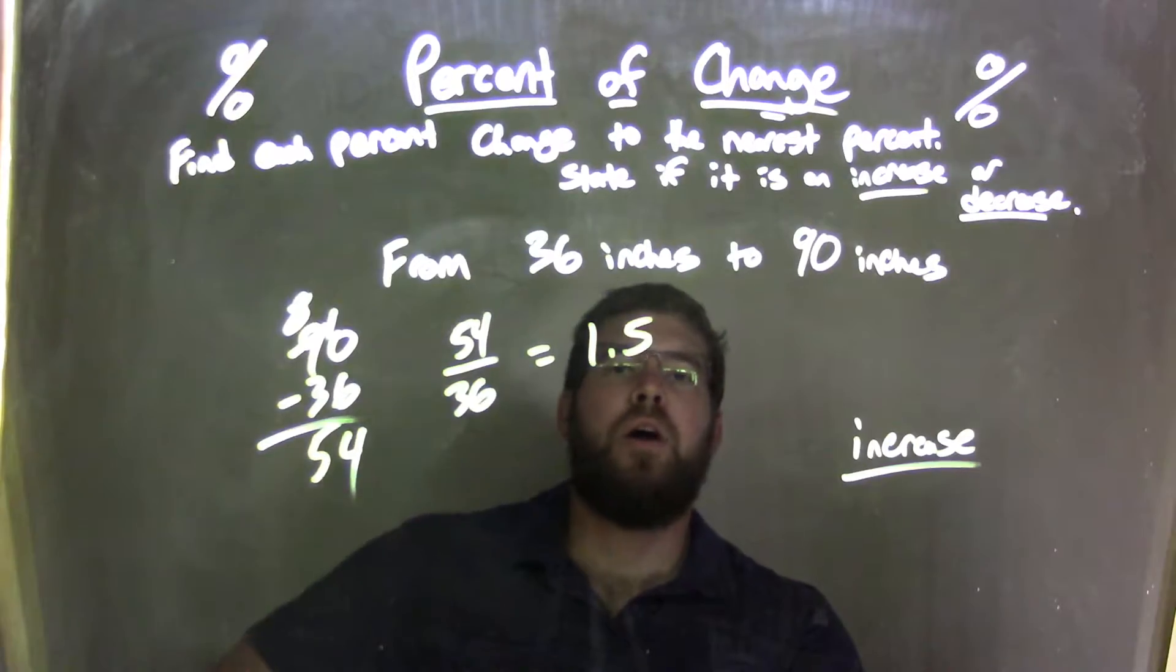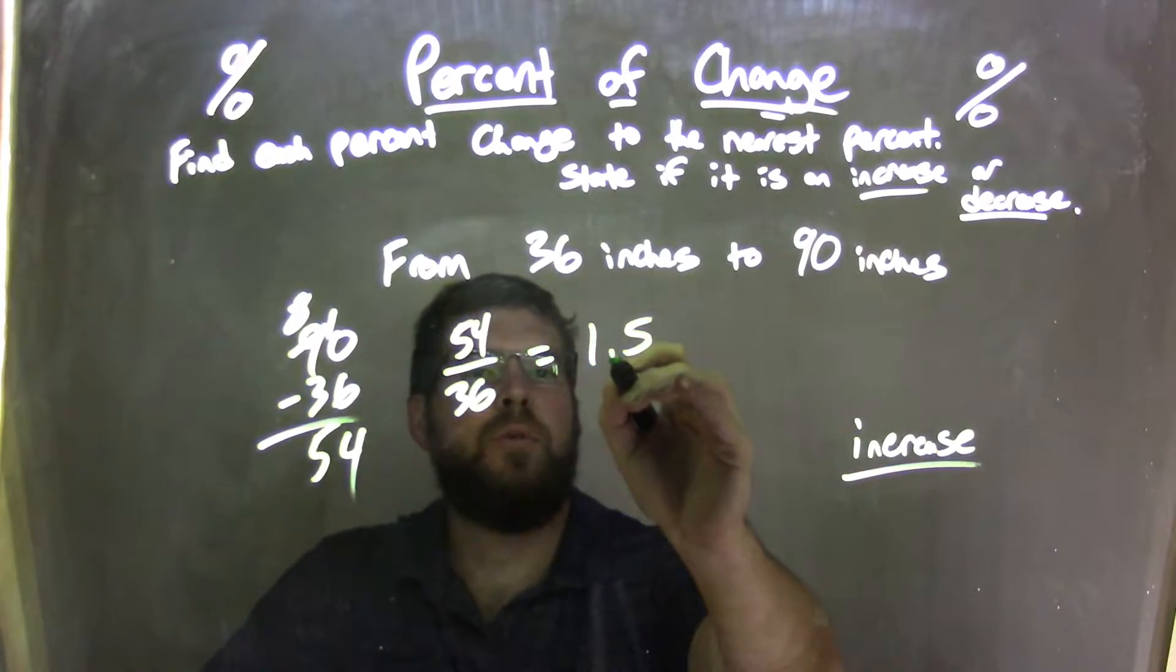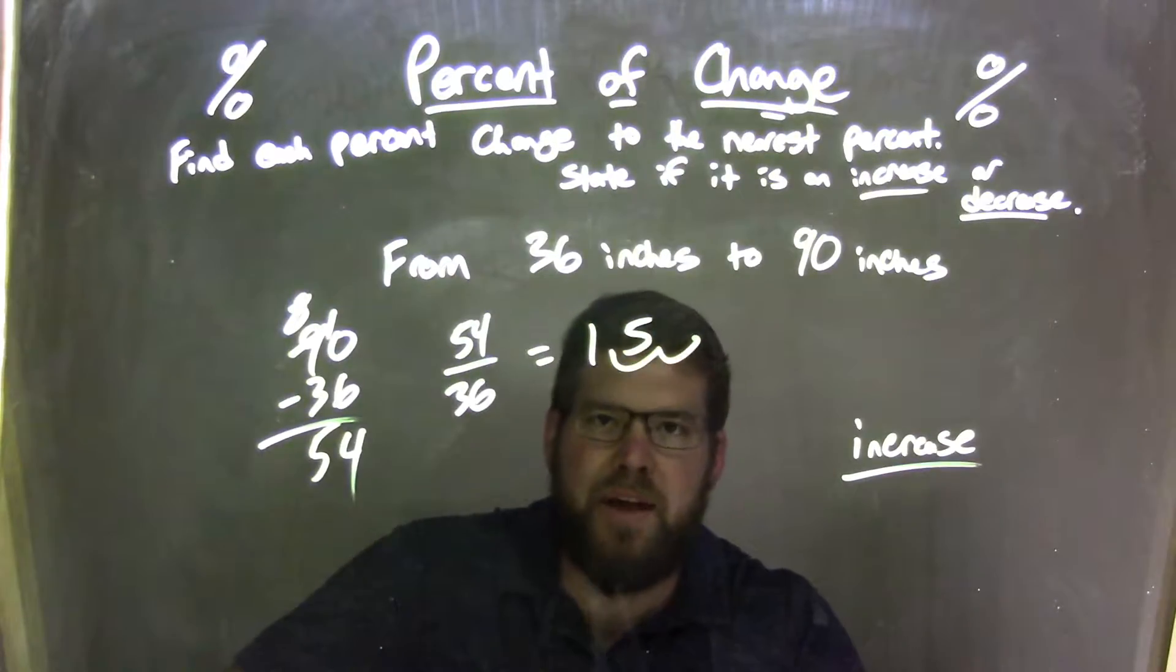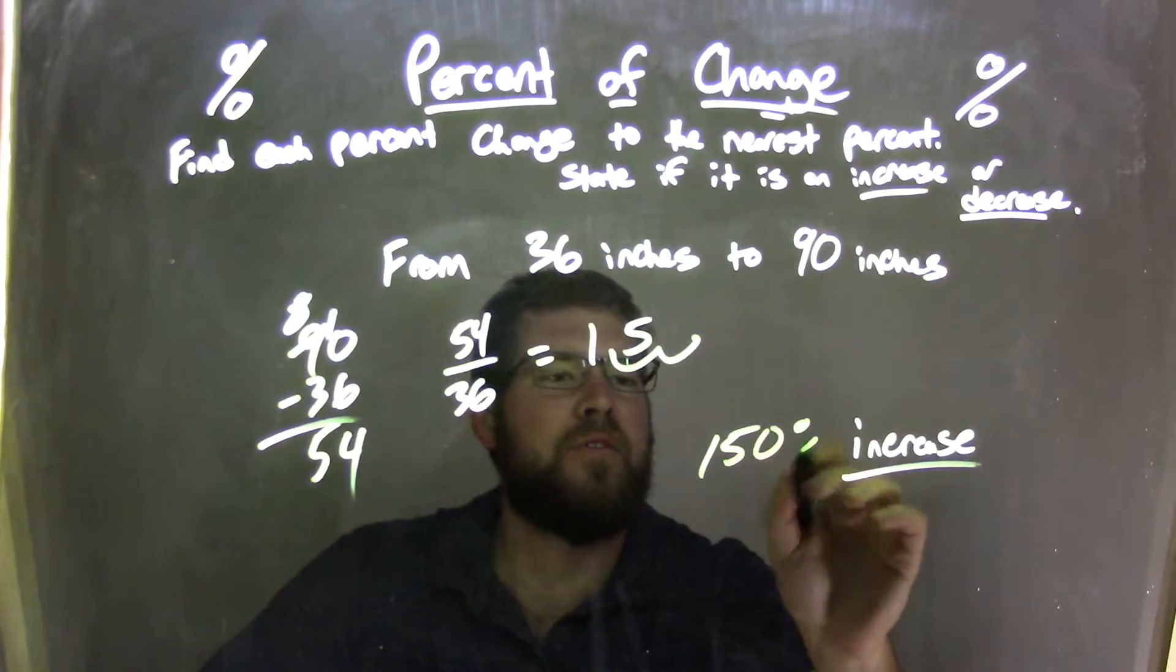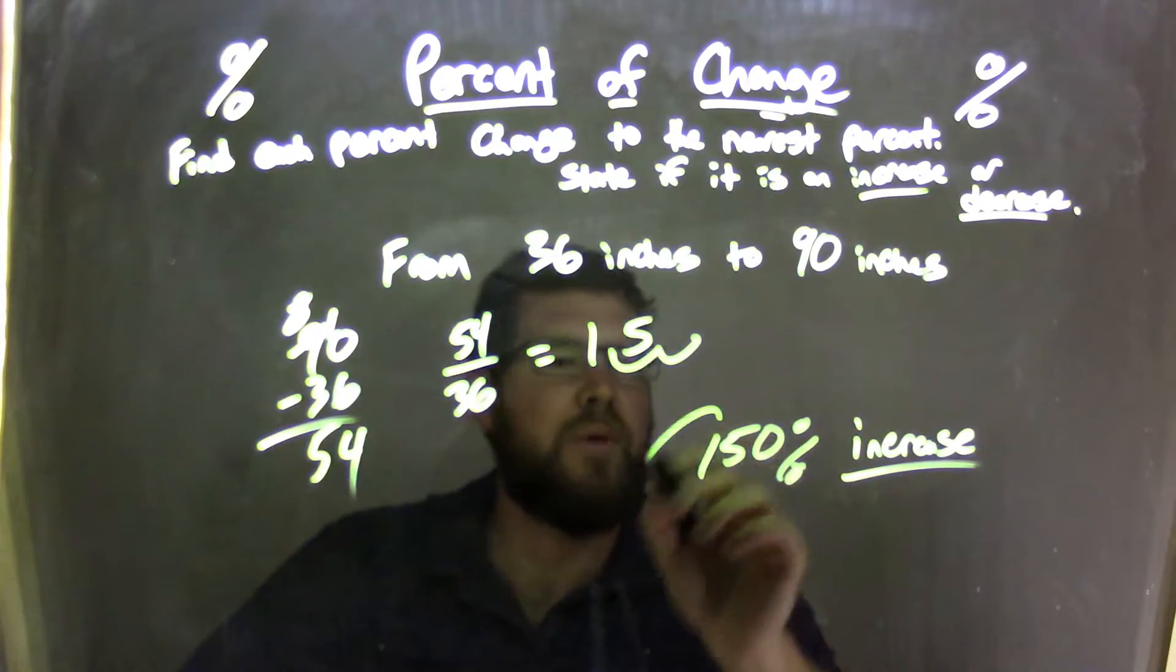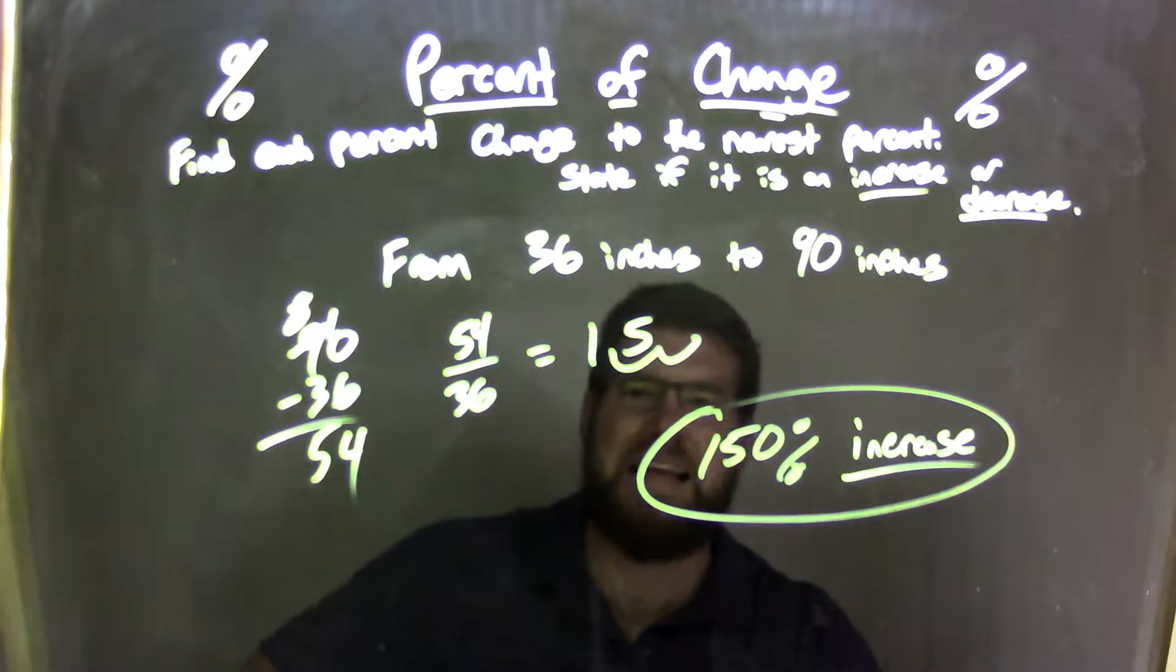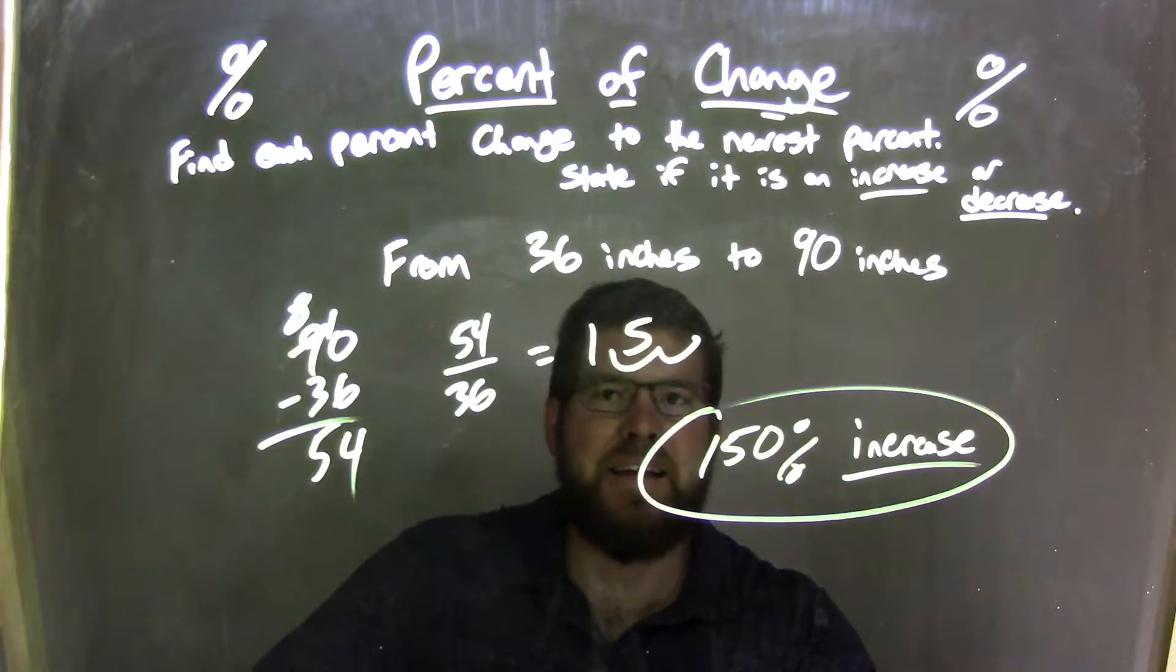Now, it's not a 1.5% increase. We know we need to move the decimal two units to make it a percent. So 1.5 comes out to be a 150% increase. We don't have to worry about rounding because there's just zeros from there on up. So we actually have a 150% increase from 36 to 90 inches.